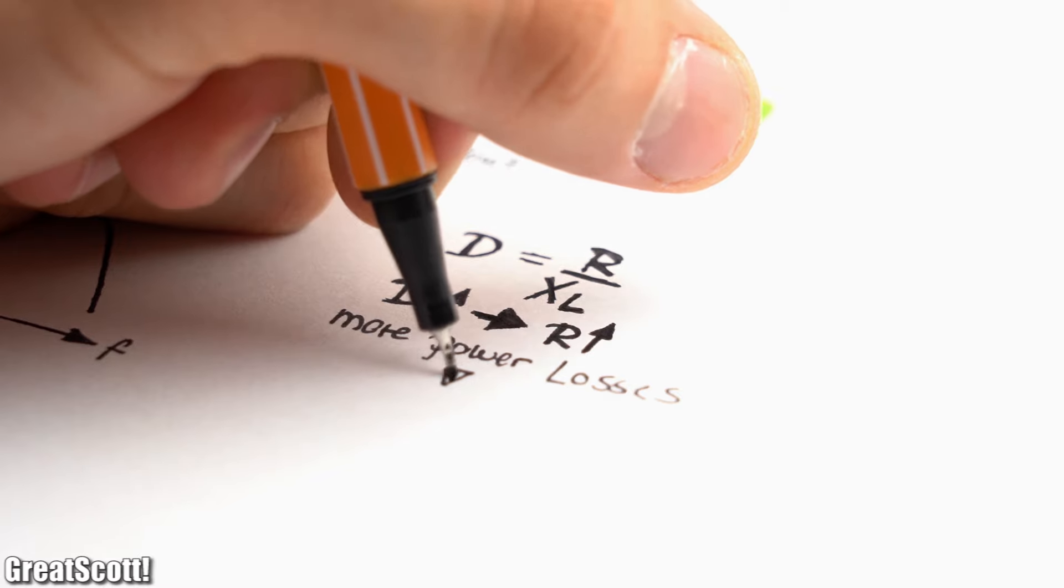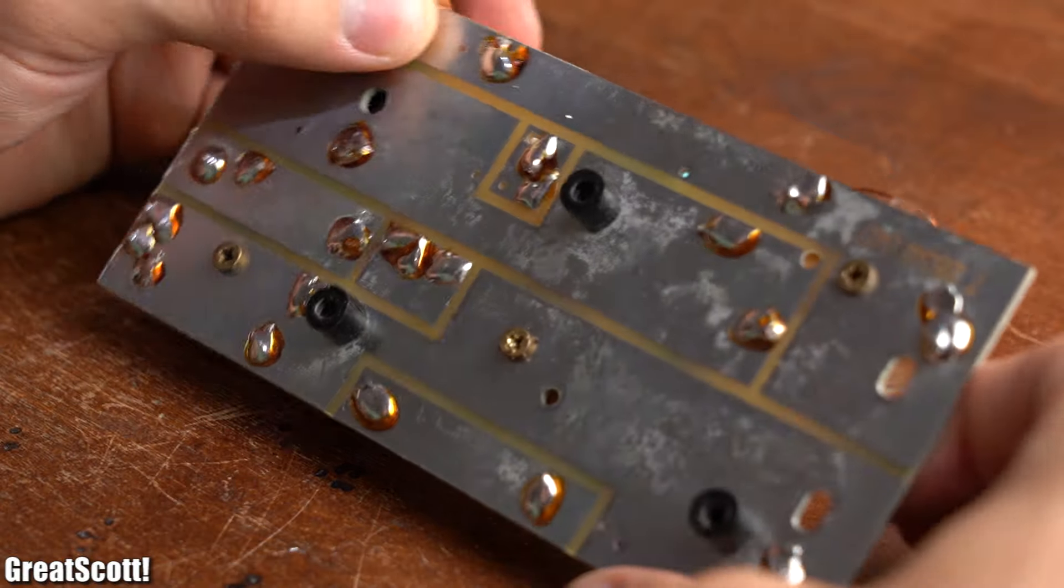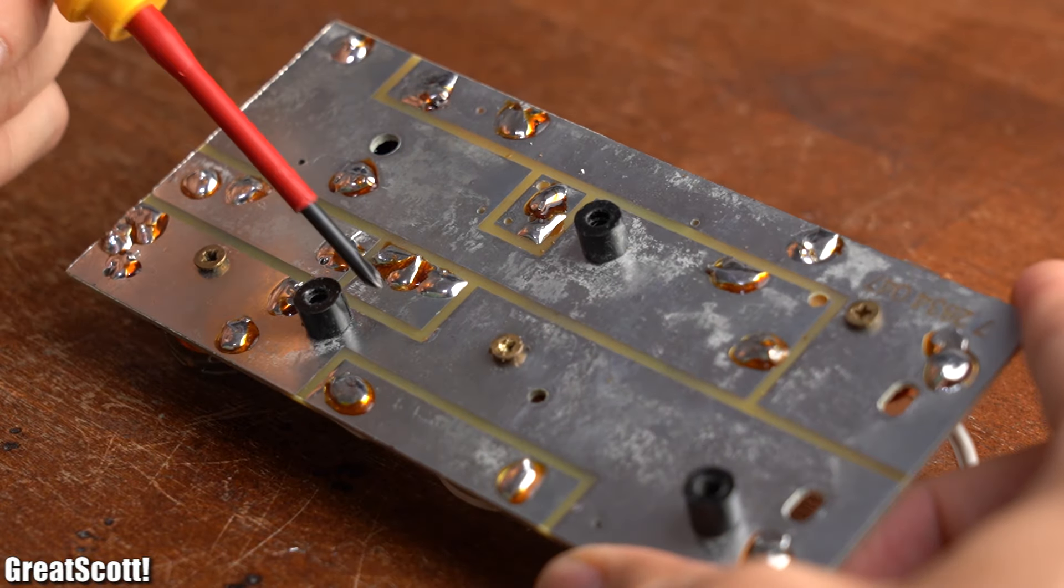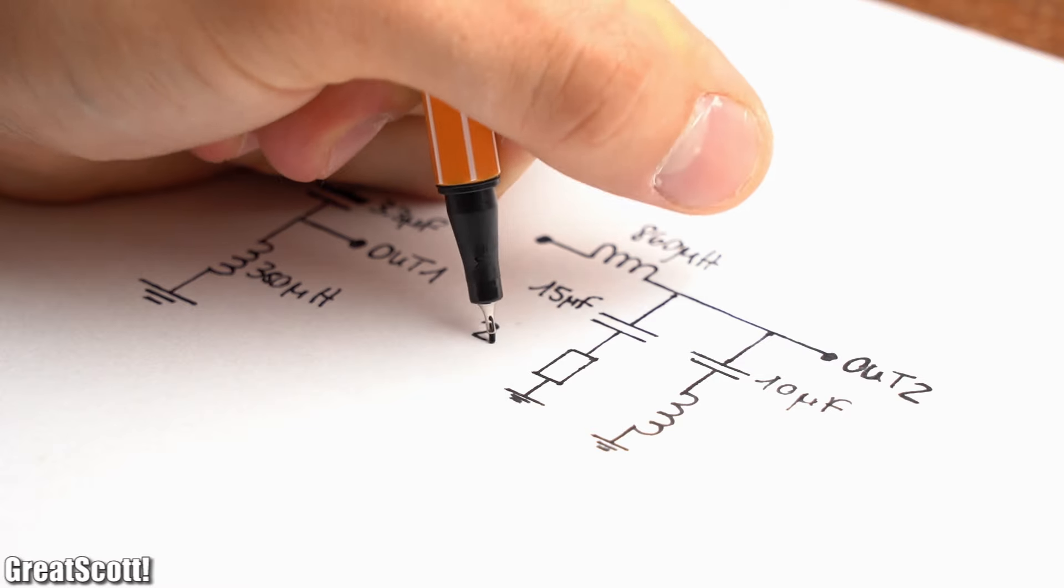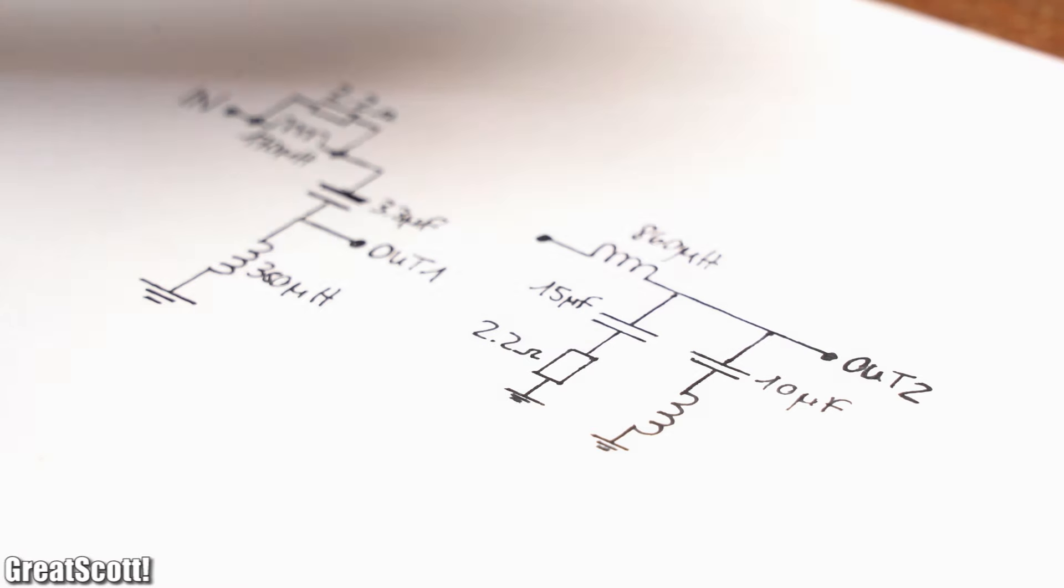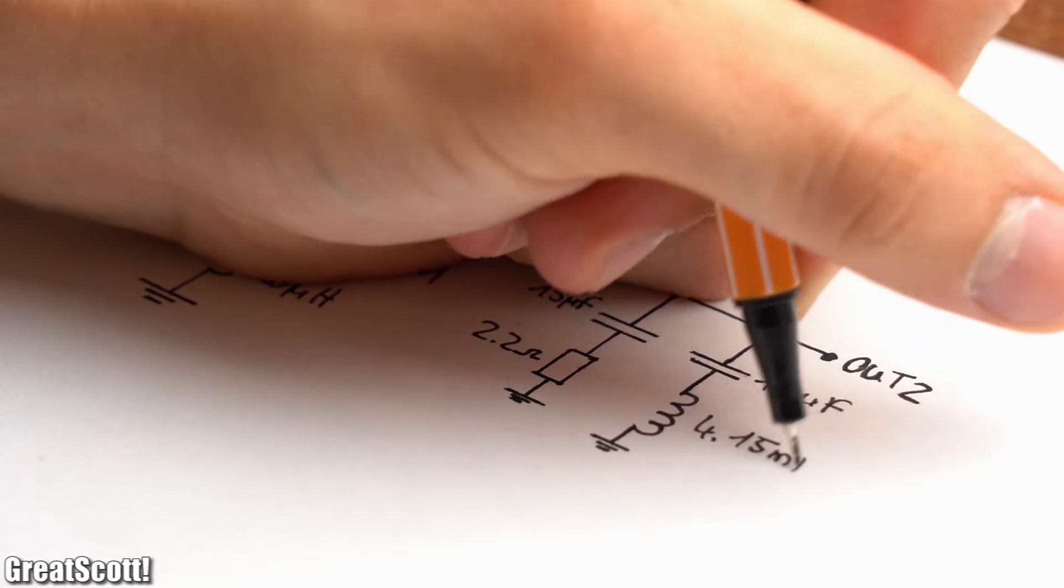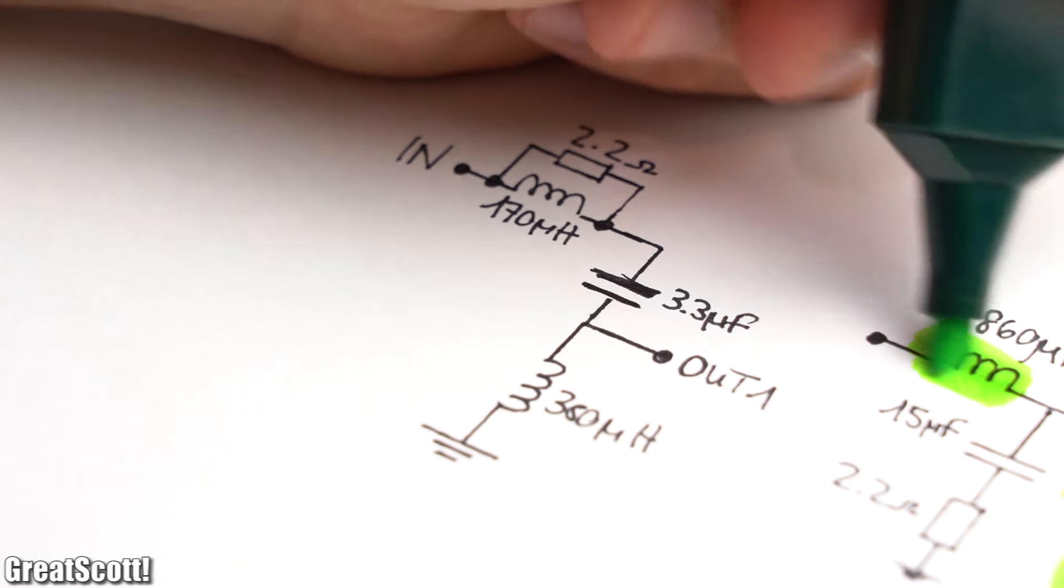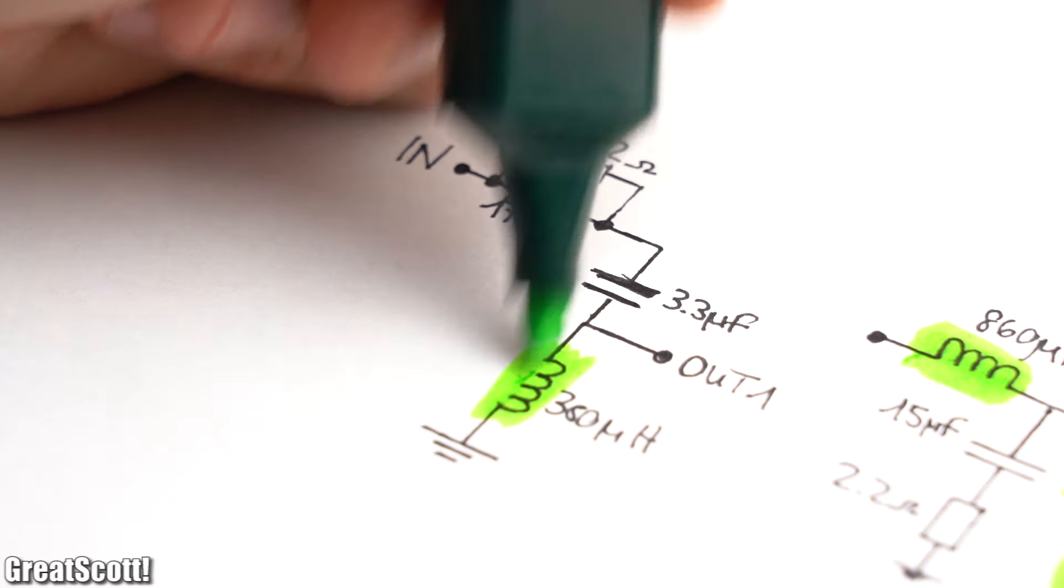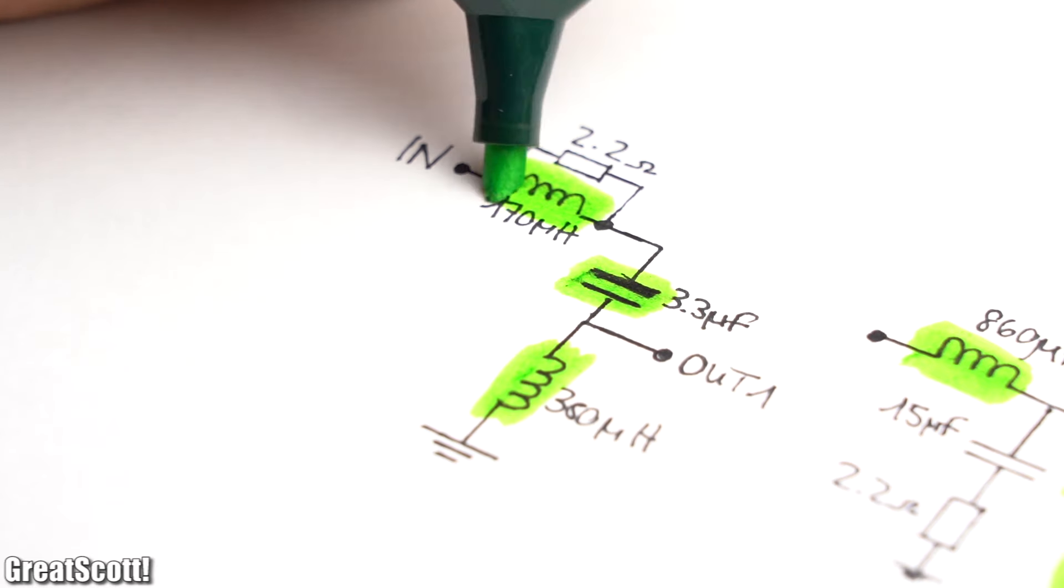So with those basics out of the way, I finally started reverse engineering the old audio crossover and found out that it uses a rather complex combination of RLC components to create two filters. Calculating those can be quite challenging, so let's firstly find out why the circuit partly only uses L and C components.